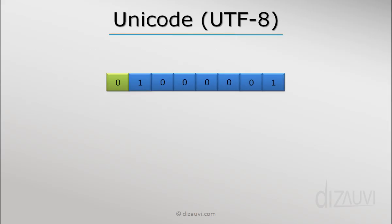We start with the decoding process: given UTF-8 encoded binary data, we retrieve the code point value. If the byte starts with a zero in the high-order bit, it is just like reading ASCII — a regular binary-to-decimal conversion. For example, the code point 65 represents the character 'A'. This is why UTF-8 is fully backward compatible with ASCII: there is no difference between ASCII and UTF-8 representations up to code point 127.